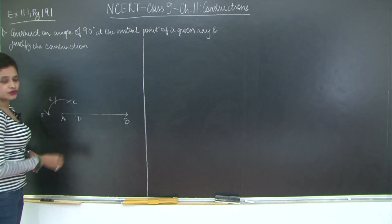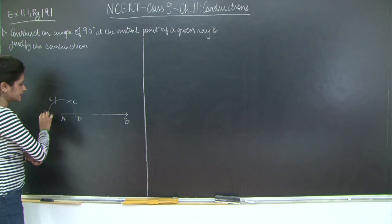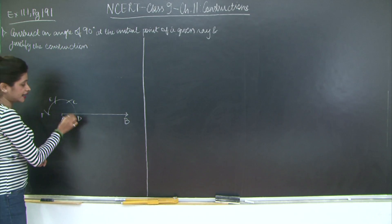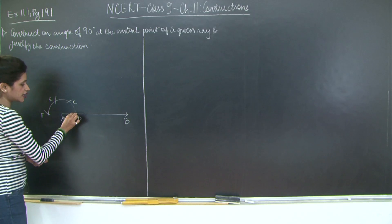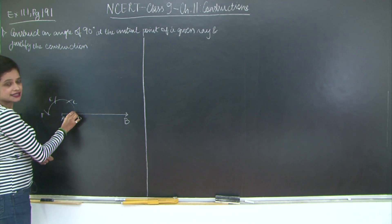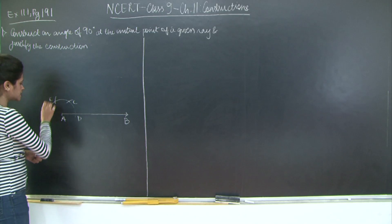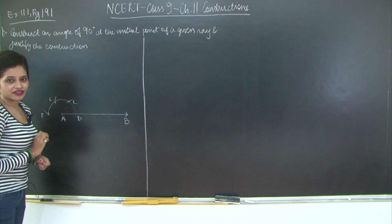If you notice, using A as a centre I cut this arc. And without changing the length, AD is equal to DC is equal to CE is equal to EF is equal to FA. All these lengths are equal.